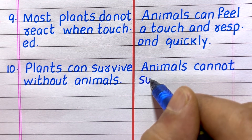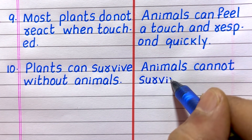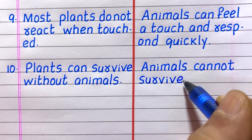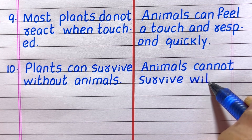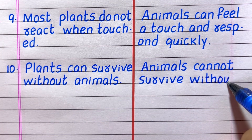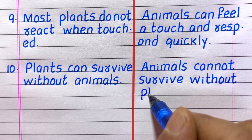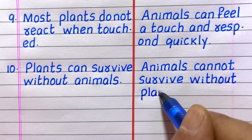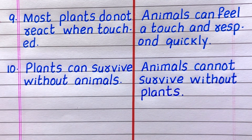Tenth difference between plants and animals: plants can survive without animals, whereas animals cannot survive without plants.